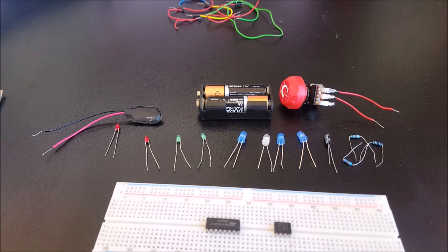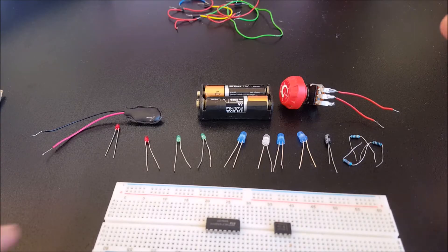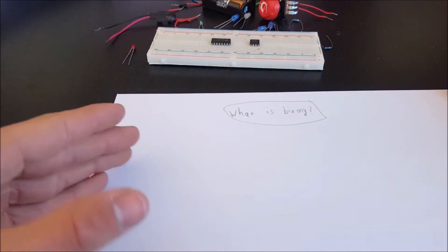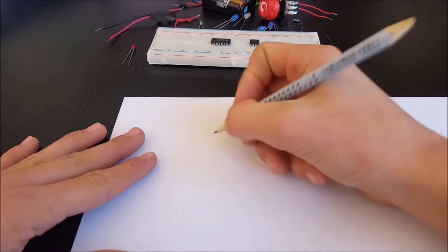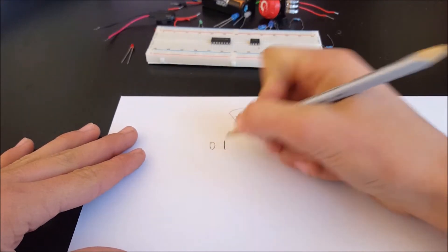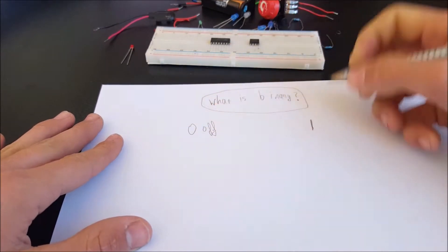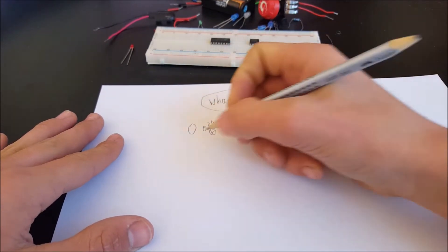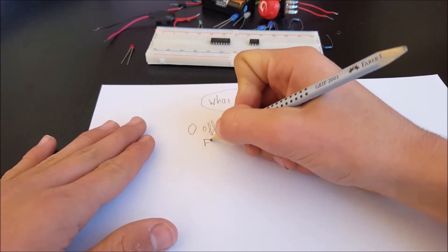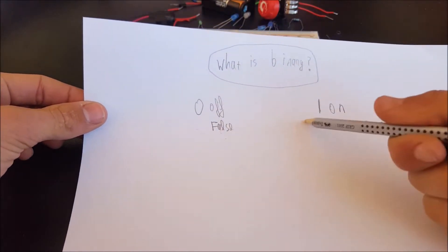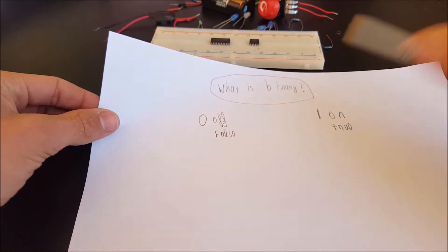But before we begin, let's make sure you the viewer know what binary is. So what is binary? Binary is like language, but instead of using letters it uses the numbers 0 and 1. 0 meaning off and 1 meaning on, 0 meaning false or 1 meaning true. So these are the main things that binary means - it just uses 0s and 1s.